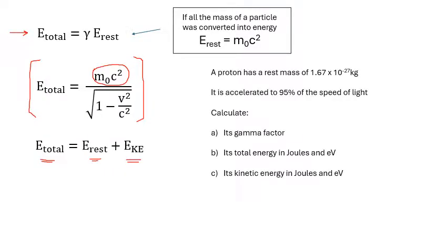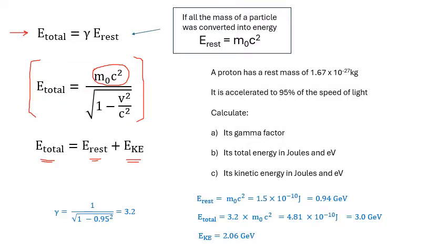Here are some questions for you to have a go at. Pause the video, have a go yourself. The answers are in three, two, one. The gamma factor works out at 3.2. Your rest energy is 0.94 giga electron volts, your total energy is about 3 giga electron volts, and your kinetic energy is 2.06 giga electron volts.